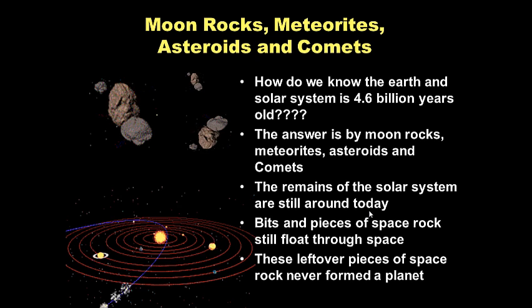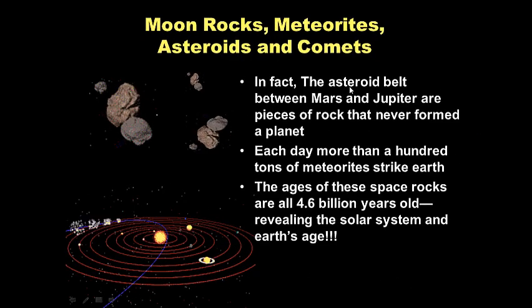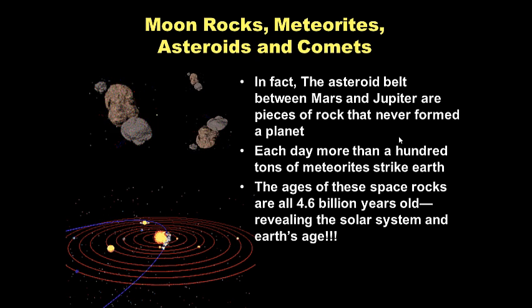These rocks, meteorites, asteroids, comets, moon rocks are really leftover pieces of space rock or debris that never formed a planet. In fact the asteroid belt between Mars and Jupiter are pieces of rock that never formed a planet. Each day more than a hundred tons of meteorites strike the earth. The ages of these space rocks, we take them in a lab and we can date them. They can tell us their age. And the ages of these space rocks are all an astounding 4.6 billion years old, revealing the age of the solar system. Remember these are space debris that have been left over since the formation of our solar system.